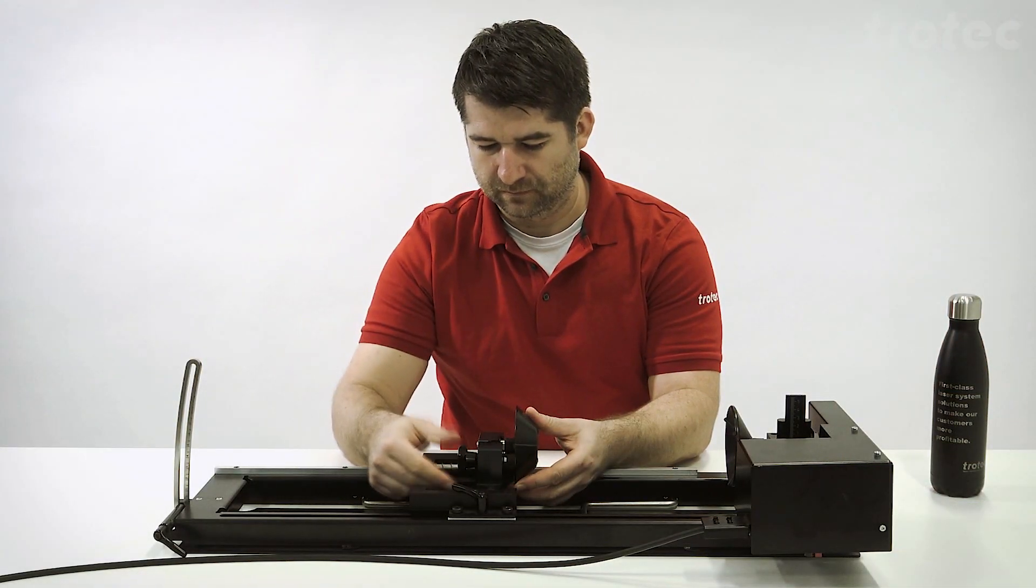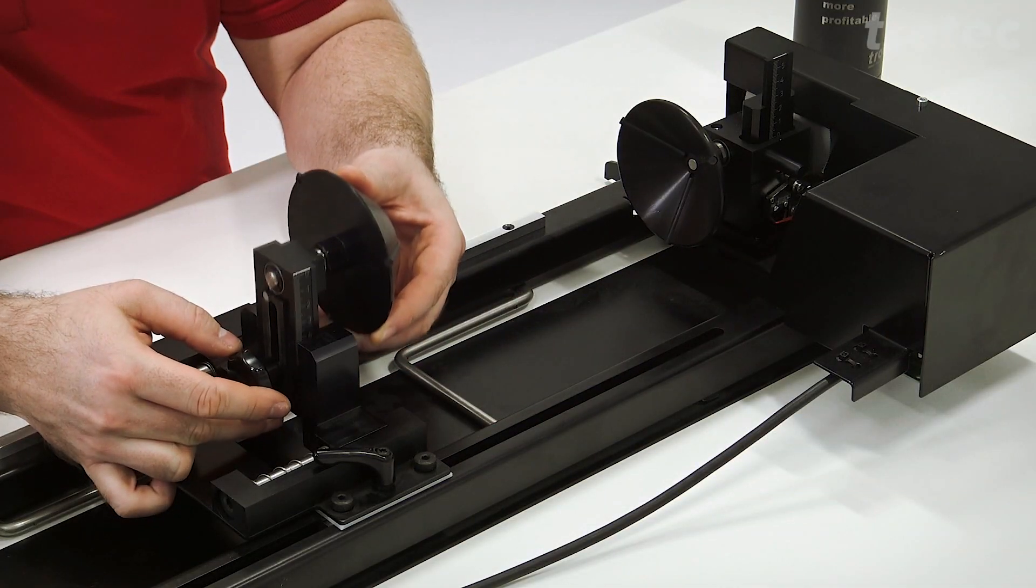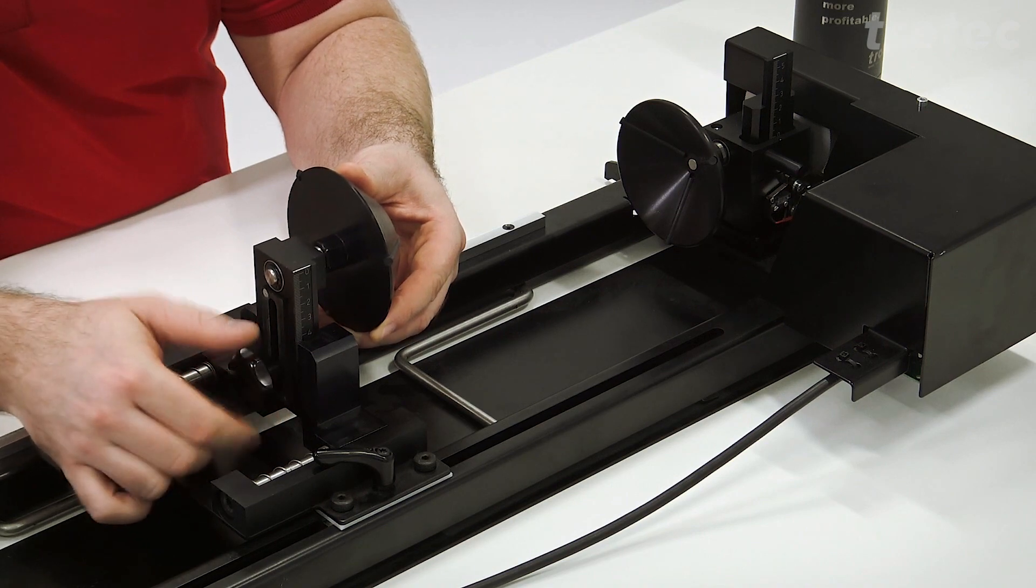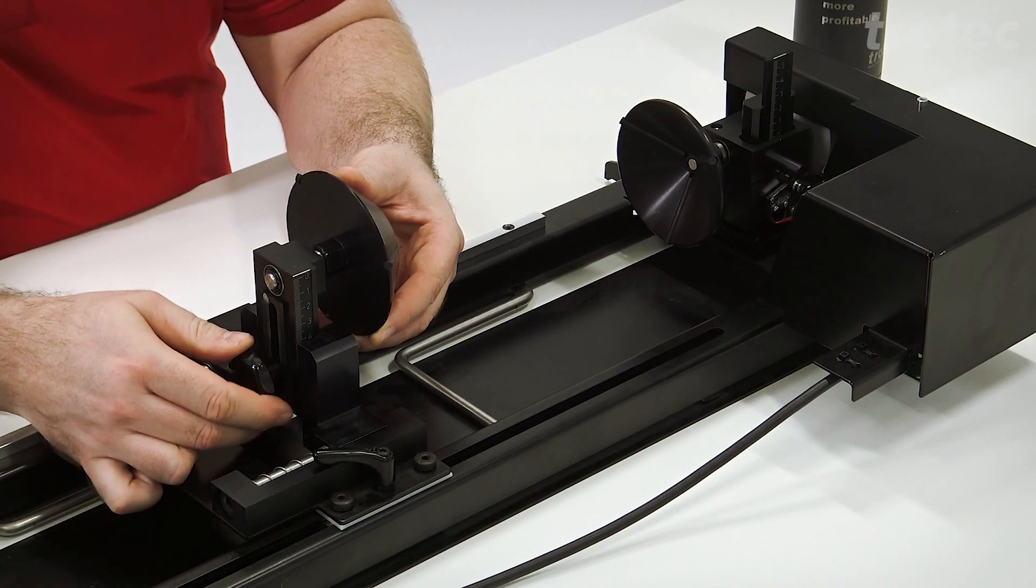You also have the option to adjust the height of the cones. You have scales on both cones so you can align the height perfectly for objects with a wider diameter.